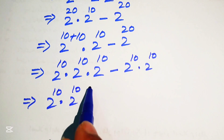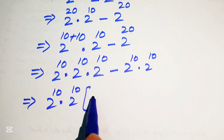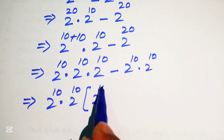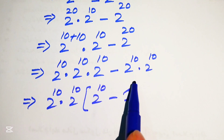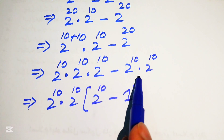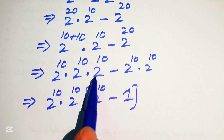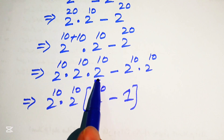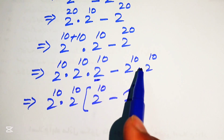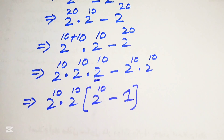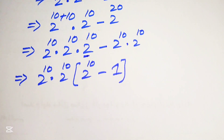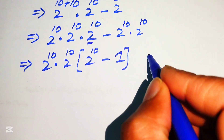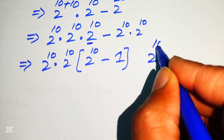Here we take 2 to the power of 10 as a common factor. The remaining values give us 2 to the power of 10 minus 1, because we take out those two common values and we are left with 2 to the power of 10 and 1.